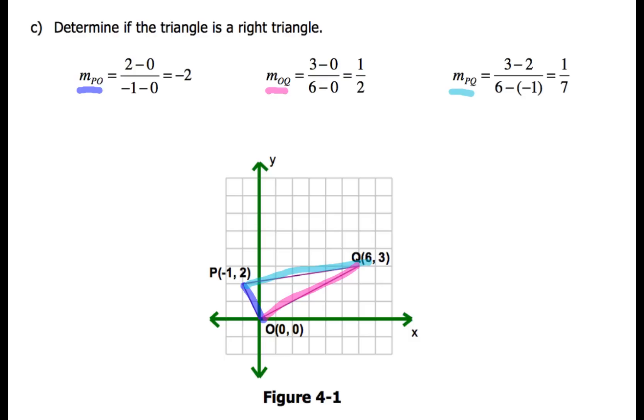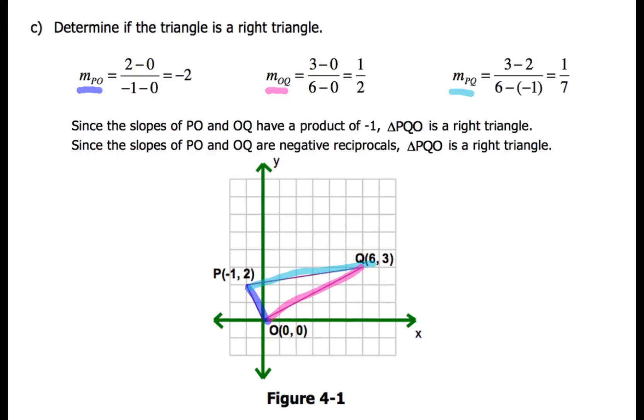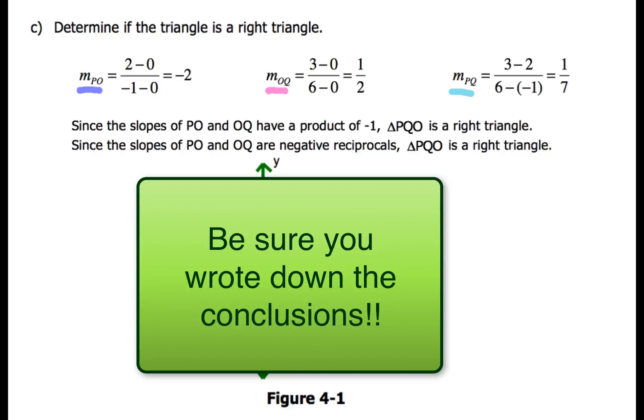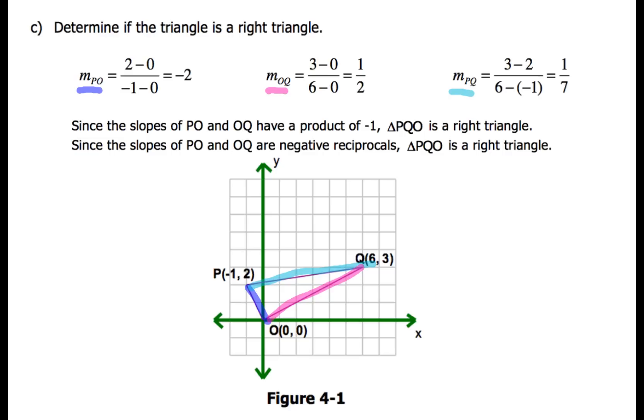So now when we go to describe this, I want you guys to describe this one of two ways. The first thing you could do is say since the slopes of PO and OQ have a product of negative one, triangle PQO is a right triangle. The other way you could describe it would be the second way. Since the slopes of PO and OQ are negative reciprocals, triangle PQO is a right triangle. That is a lot of stuff in this problem, but I want you guys to make sure that you write down the conclusion on that. Don't just be satisfied with writing down the slopes. Make sure you also write a sentence to justify your reasoning.